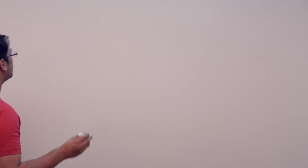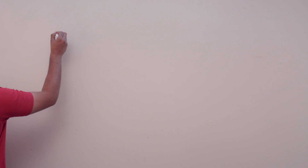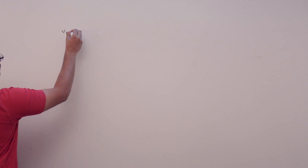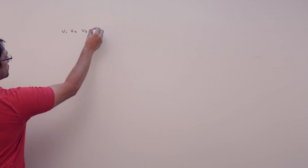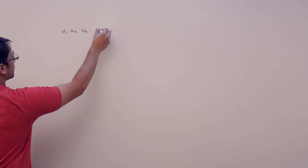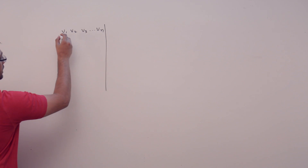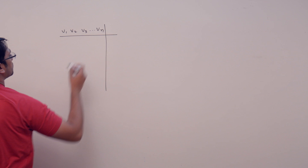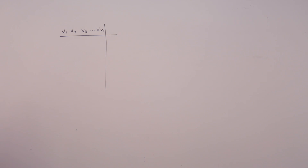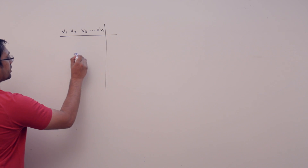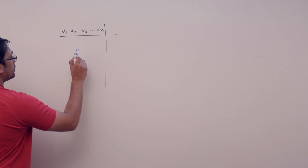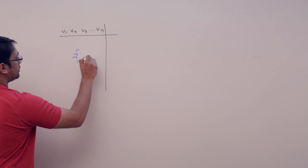Now let us look at the previous question in a different manner. If we have n variables — v1, v2, v3, up to vn — then for these n variables, 2 raised to power n different combinations are possible.